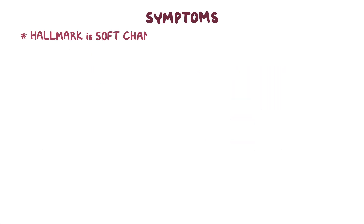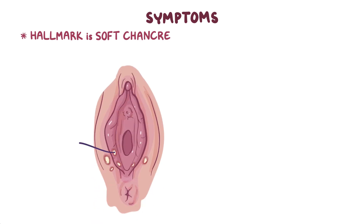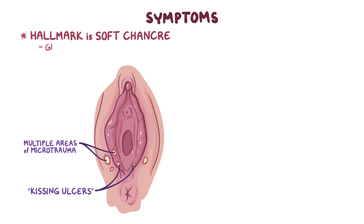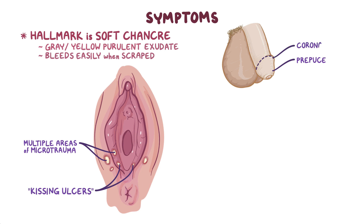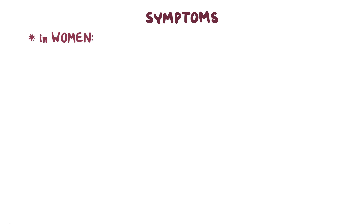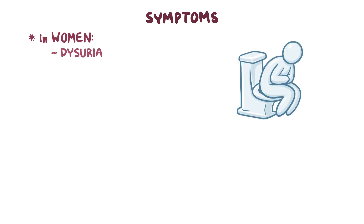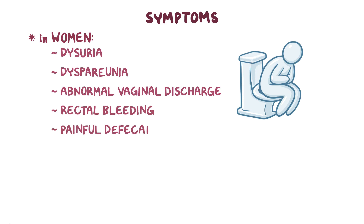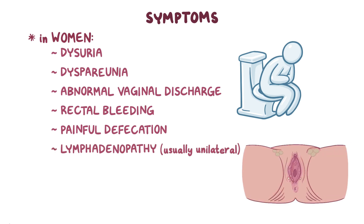A hallmark symptom of the disease is the soft chancre. Multiple ulcers may be noted due to multiple areas of microtrauma, or from direct contact between adjacent areas resulting in kissing ulcers. The base of the ulcers is covered with a gray or yellow purulent exudate and bleeds easily when scraped. Common sites in men are the prepuce, corona, or glans of the penis; in women, the labia, vaginal introitus, and perianal areas. Women may also experience dysuria, dyspareunia, abnormal vaginal discharge, rectal bleeding, or painful defecation. In 50% of cases, there may be painful inguinal lymphadenopathy, usually unilateral, which may become suppurative.